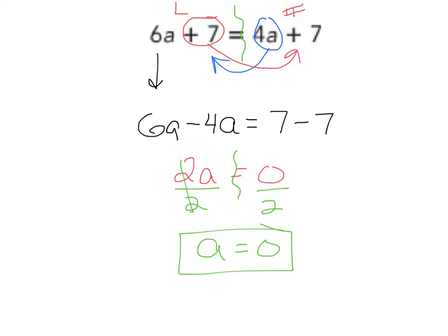And if you think about it, if you were to plug this in up here, 6 times 0 is 0, 0 plus 7 is 7. Let's try it on the right side. 4 times 0 is 0, 0 plus 7 is 7. So 7 equals 7. So therefore, that is the correct answer.